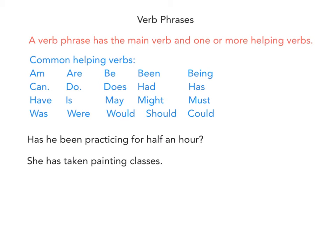Let's look at some examples. 'Has he been practicing for half an hour?' Right away I see two helping verbs: 'has' and 'been.' So my complete verb phrase is 'has been practicing.' Next: 'She has taken painting classes.' I see 'has,' which I know is part of a verb phrase — 'has taken.'